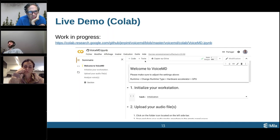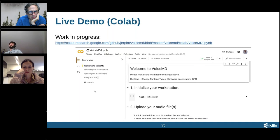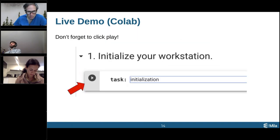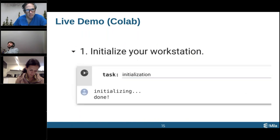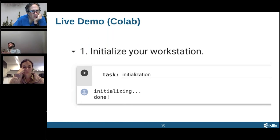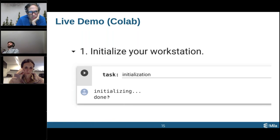This is the page you see when you first land on the link. You should probably be signed into Google when using this because it's a Google service. The first thing you want to do is hit the play buttons. When you hover over the cell, you'll see a play button — hit it to initialize the workstation. It'll take a bit of time because it's going to fetch our code and model, install everything locally. Google will ask if you're sure you want to execute code from a random stranger — you should execute it. Once done, it'll say 'done.'